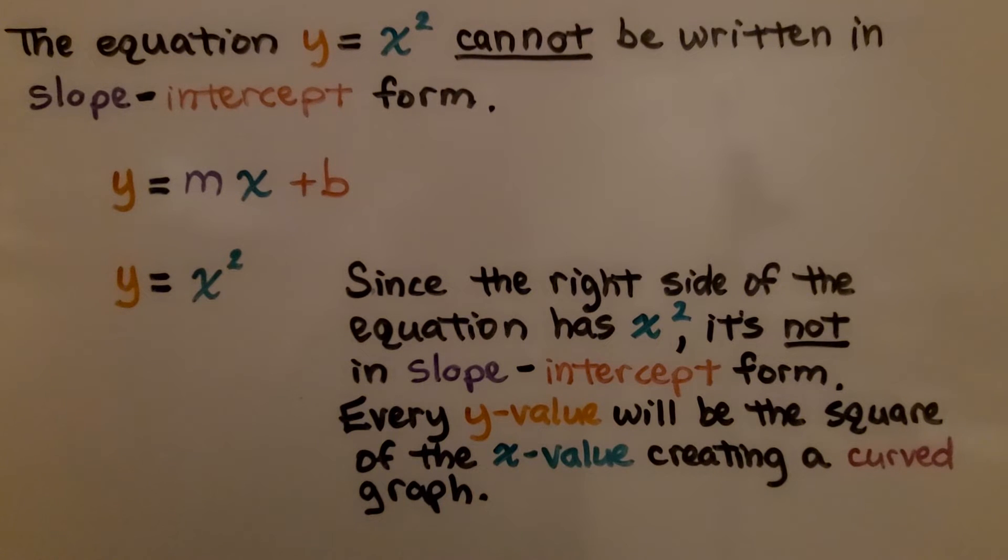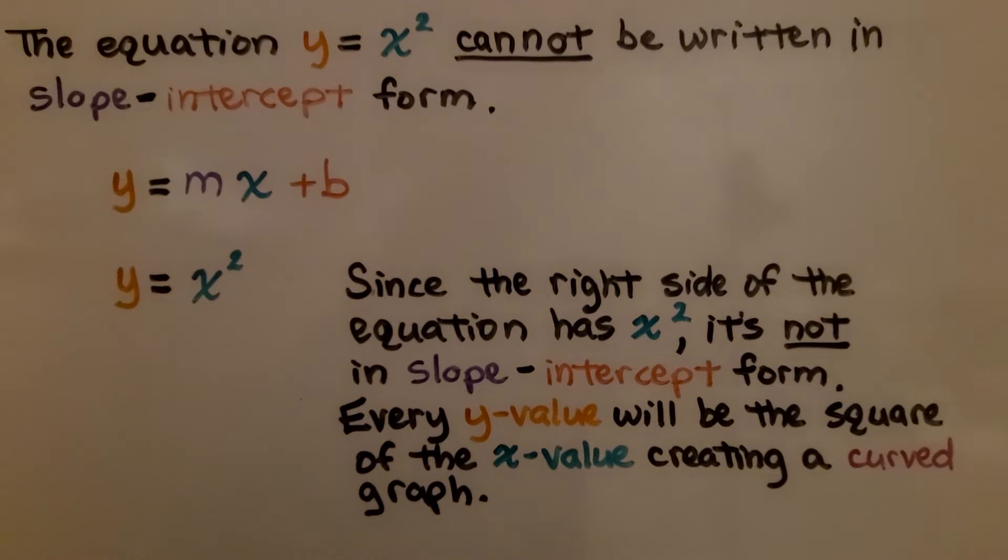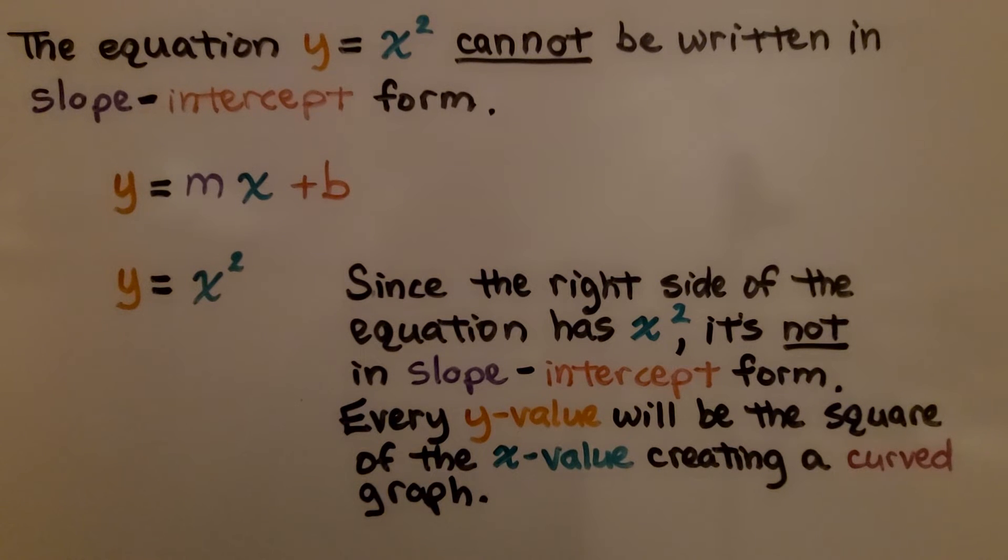The equation y equals x squared cannot be written in slope-intercept form. This is slope-intercept form. Since the right side of the equation has x squared, it's not in slope-intercept form. Every y value will be the square of the x value creating a curved graph.